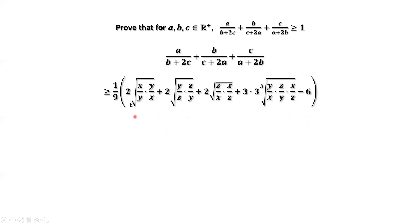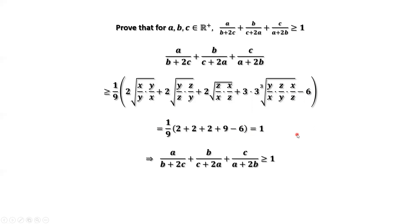Continuing to simplify: each pair gives 2, and 2 plus 2 plus 2 plus 3 times 3 equals 9, minus 6 gives 1 over 9 times 9, which equals 1. This means A over B plus 2C, plus B over C plus 2A, plus C over A plus 2B is bigger than or equal to 1. That's all. Thanks so much and I'll see you next time.